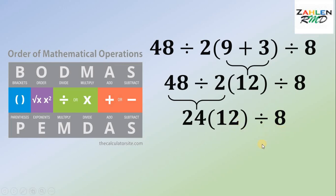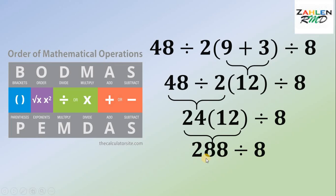Keep in mind we do division and multiplication from left to right. So 24 times 12 gives us 288, then bring down 8. Lastly, 288 divided by 8 gives us 36. Therefore, the correct answer to this viral math problem is simply 36. And we're done.